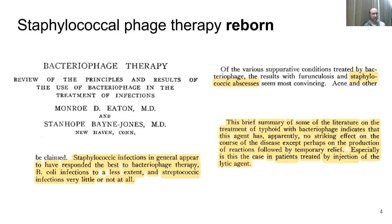One alternative therapy is phage therapy. Another is quorum sensing inhibition, but really phage therapy is not a new idea. This was used to treat all sorts of bacterial infections before the advent of antibiotics, and it was known back then, with very little knowledge of host range or basic phage biology, that Staphylococcus aureus was a particularly good target. There was a review published by Monroe Eden and Stanhoe Bain-Jones, two physicians at Yale in 1935, who reviewed previous phage therapy literature and noted explicitly that Staphylococcus infections in general appeared to have responded the best to phage therapy — E. coli infections not as much, and really nothing at all for streptococcus infections.